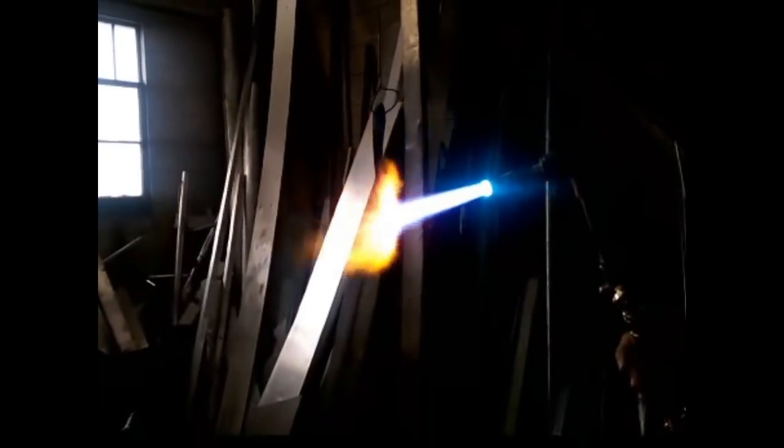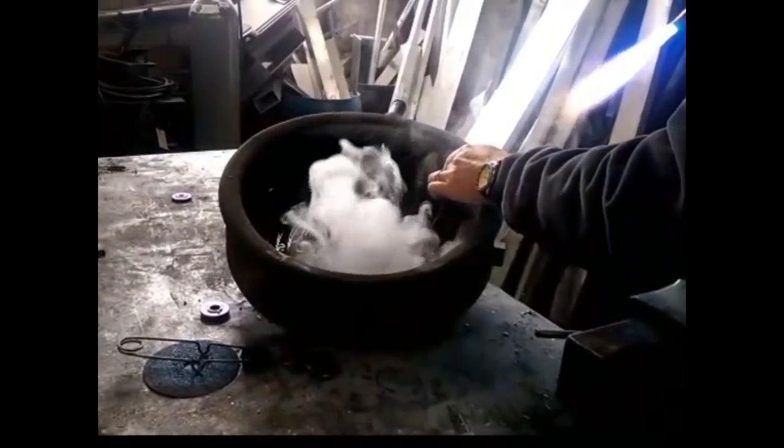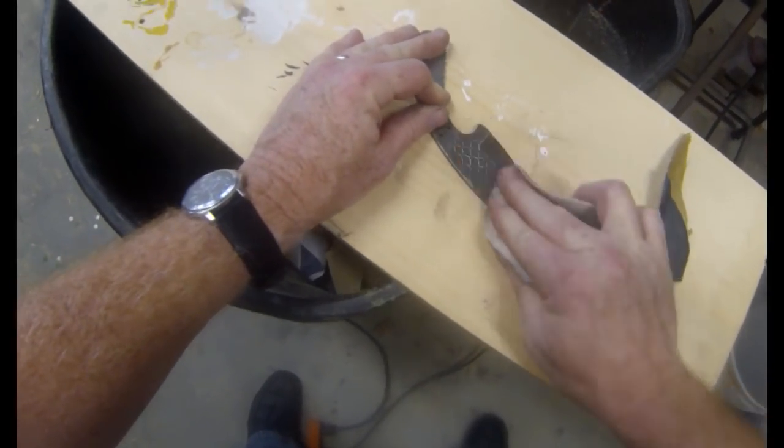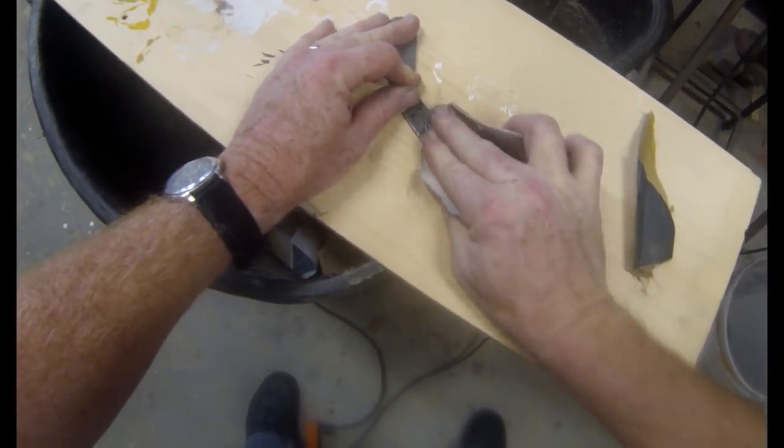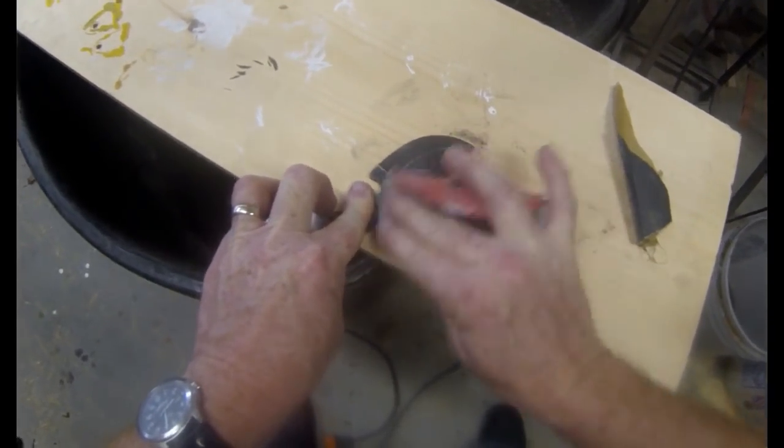We're going to start by heat treating this knife. The etching is already done. I'm going to heat treat it with a torch and then dump it in some oil, and then I'm going to clean it up with some fine grit emery paper, about 400 or so.